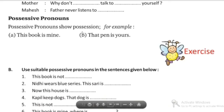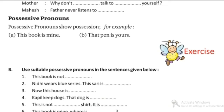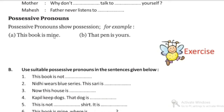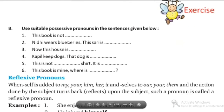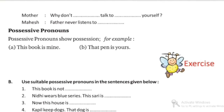Second is possessive pronouns. Possessive pronouns show possession — like 'this book is mine.' These pronouns give the answer to 'whose' or 'whom.' Whose book is this? This book is mine. Whose pen is this? That pen is yours. This book is not yours. These are examples of possessive pronouns.